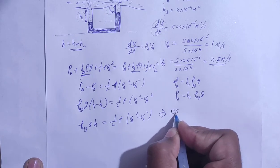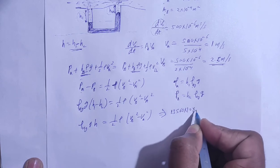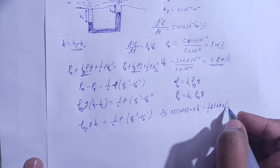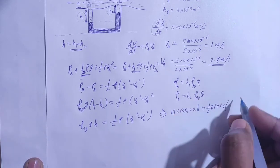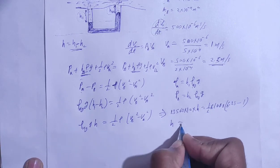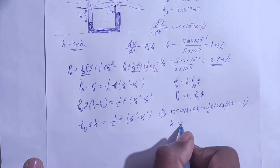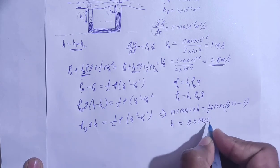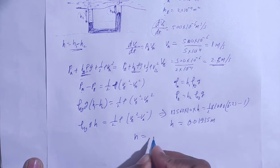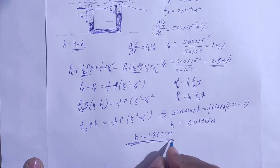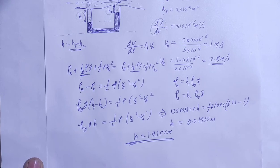Substituting values: 13,560 × g × H = ½ × 1000 × (2.5² − 1²) = ½ × 1000 × (6.25 − 1) = ½ × 1000 × 5.25 = 2625. Solving for H gives H = 0.01935 m, or approximately 1.935 centimeters mercury column.